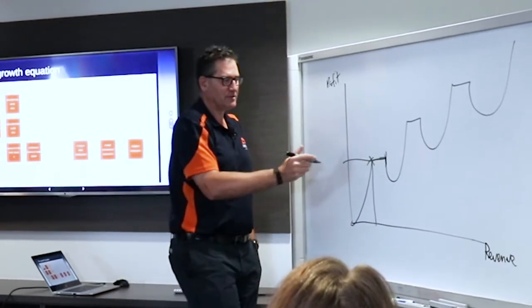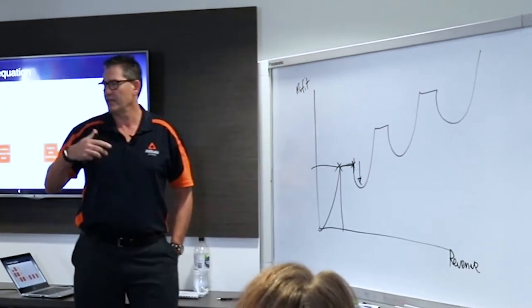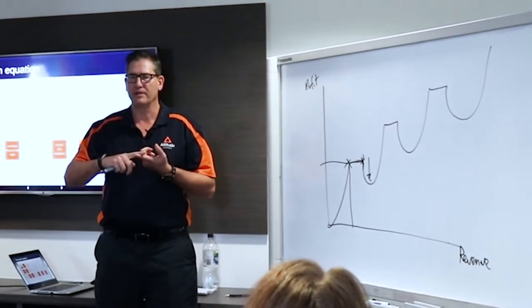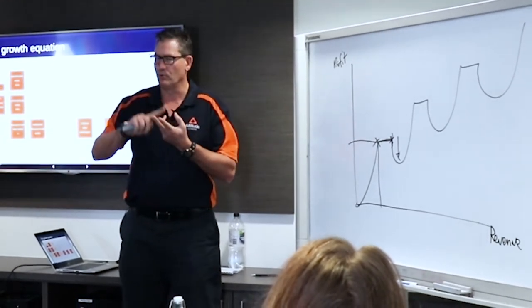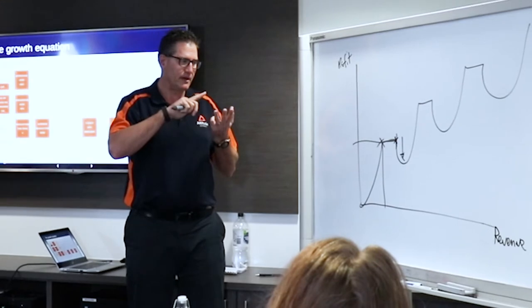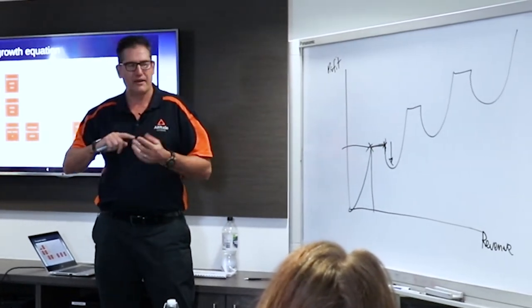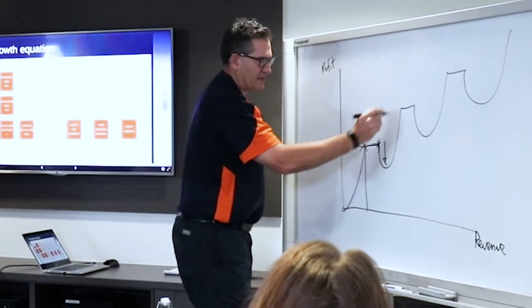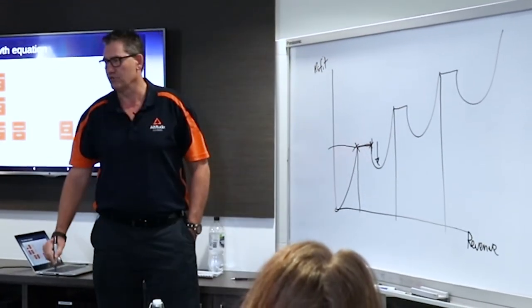Then what actually happens is you reach another tipping point where your profit goes down. That's because when you get to a certain scale, you have to reinvest back into your business. So you have to employ more people, you have to buy more equipment, you have to move to a bigger premises, you have to invest in IT. And these profit dips happen at various points of revenue along the growth chart.